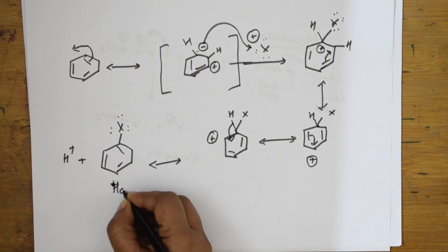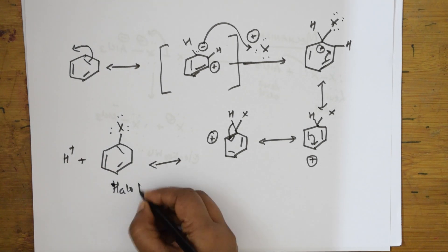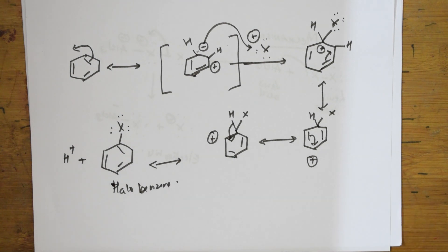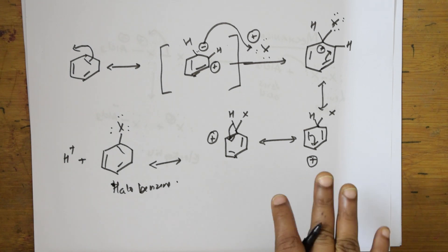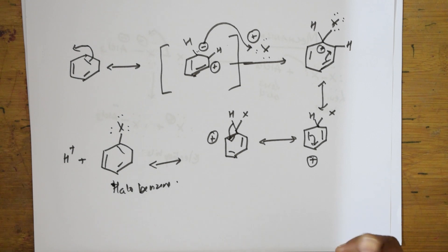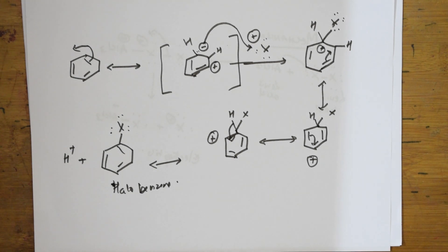The final product is halobenzene — for example, chlorobenzene or bromobenzene. I hope the concept of halogenation is clear. I will meet you again in the next video with the next type of electrophilic substitution reaction. Thank you for watching.